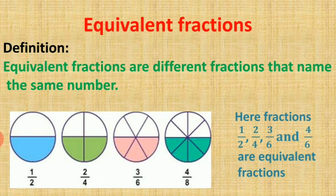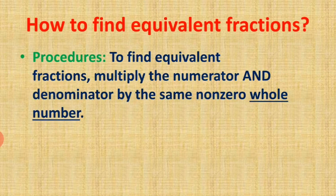Therefore we can say that two upon four, three upon six, and four upon eight are equivalent fractions of one by two. To find equivalent fractions, multiply the numerator and denominator by the same nonzero whole number. A nonzero whole number means you can take any whole number but you cannot take zero.